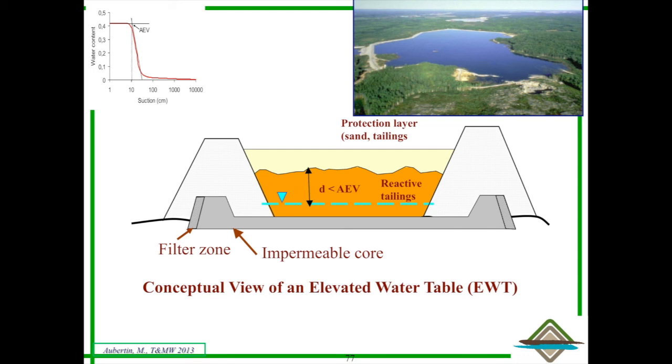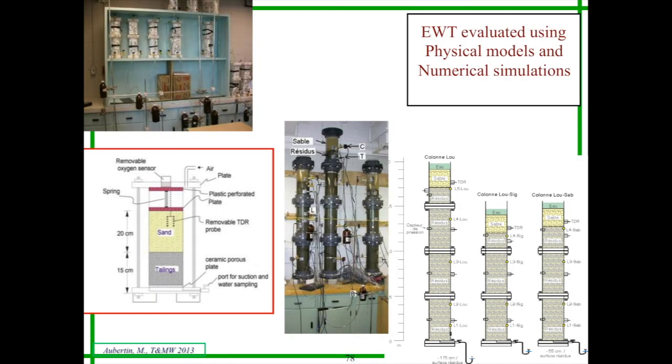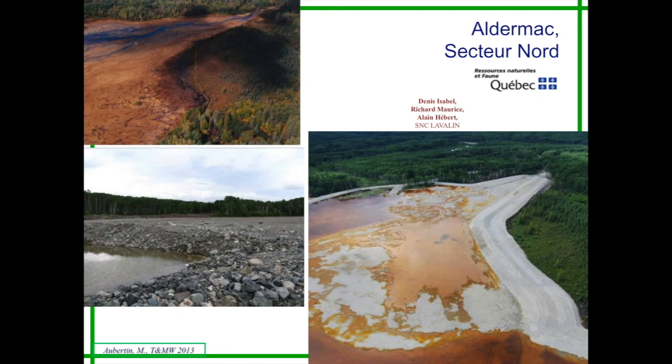On top, the only thing you need is a layer that prevents evaporation. So it needs to be a coarse grain material and at the same time favor infiltration because you want water moving down. This has been investigated using column tests.